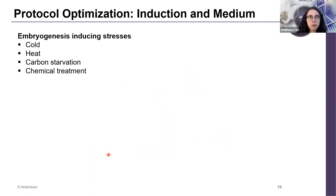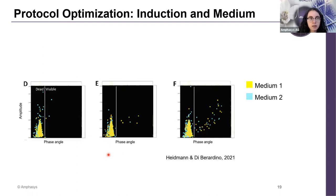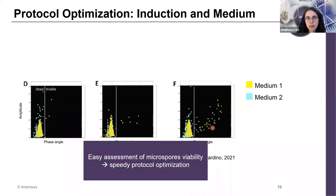This is the second example. I've been talking about the importance of the inductive treatment, and some species prefer one inductive treatment — for example cold — others prefer a hot treatment, some starvation, and so on. Genotypes may also have variation. In this experiment, three inductive treatments were compared — D, E, and F — and two culture media. In the scatter plots derived from those comparisons, you see that the points on the right of the vertical line are the viable microspores, and you can clearly see that condition F was the one that best preserved the viability of the microspores. So the AMPAS Z32 makes for a very handy tool for comparison of multiple treatments at the same time, speeding up the development and optimization of the protocol.